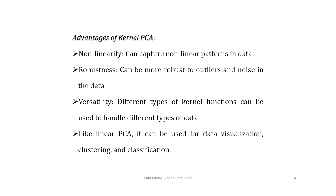Now we discuss the advantages of kernel principal component analysis. First, it can capture non-linear patterns or non-linear hidden structures in the data without making any assumptions about the function φ — even if φ is unknown, we can still use kernel PCA. Second, robustness: kernel PCA is usually more robust to outliers and noise compared to traditional PCA, which is based on simple linear projections.